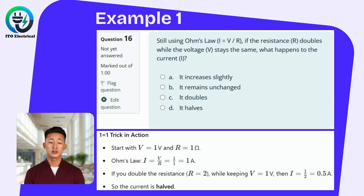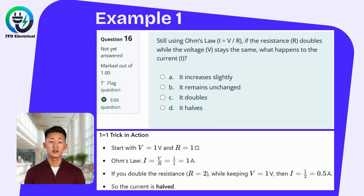Next, double the resistance from one ohm to two ohms while keeping the voltage at one volt. This change causes the current to drop to half an amp, meaning the current is halved. Therefore, if the resistance doubles and the voltage stays the same, the current is halved.